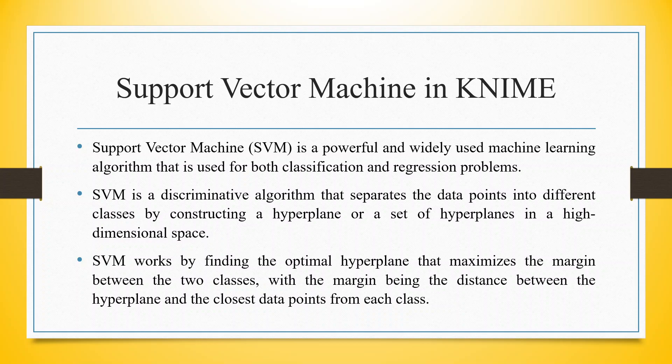SVM is a discriminative algorithm that separates data points into different classes by constructing a hyperplane or a set of hyperplanes in a high dimensional space. SVM works by finding the optimal hyperplane that maximizes the margin between the two classes, with the margin being the distance between the hyperplane and the closest data point from each class.